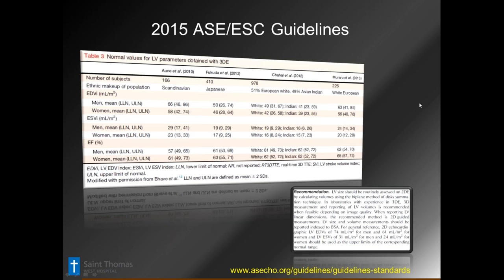The guidelines also looked at different ethnicities across the world in terms of average BSA and provided normal numbers. For those not familiar, the ASE guidelines are freely available on the ASE site — you do not have to be a member to get them. You can go under guidelines and pick up any of these guidelines that give you normal cutoff values and the new diastolic guidelines as well.